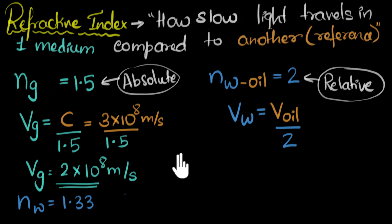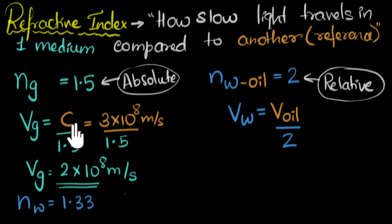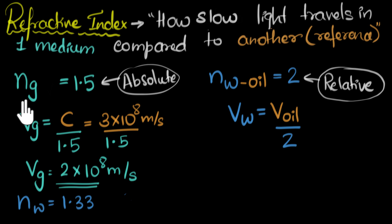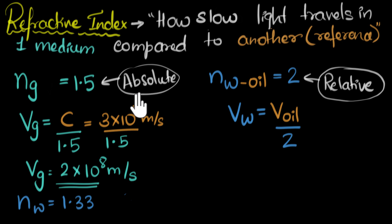To quickly summarize: refractive index is a number that tells us how slow light travels in a medium compared to some other medium. When we are comparing with vacuum or air, we usually don't write that because it's a standard — it's understood — and we call that absolute refractive index. When we're comparing with some other medium, we call it relative refractive index. Most of the time we won't even use these words explicitly — we'll just say refractive index of glass is 1.5, or refractive index of water with respect to oil is 2. But now we know the meanings of those words.